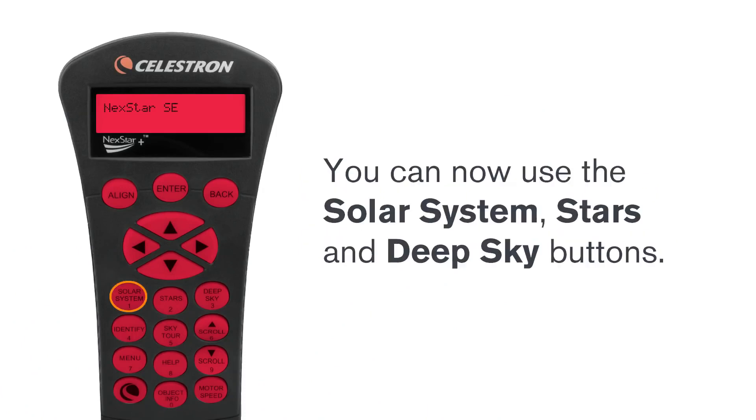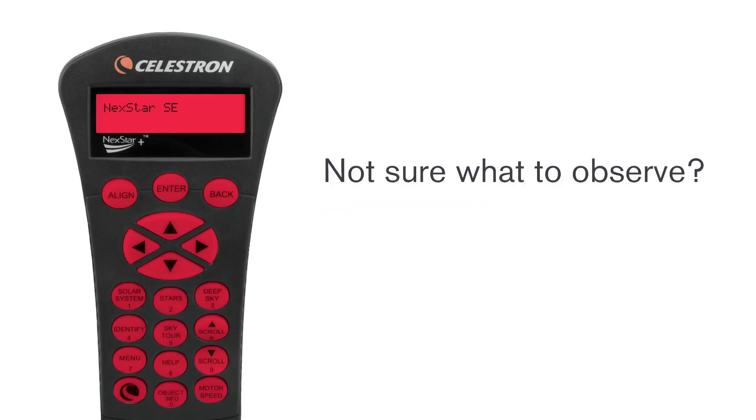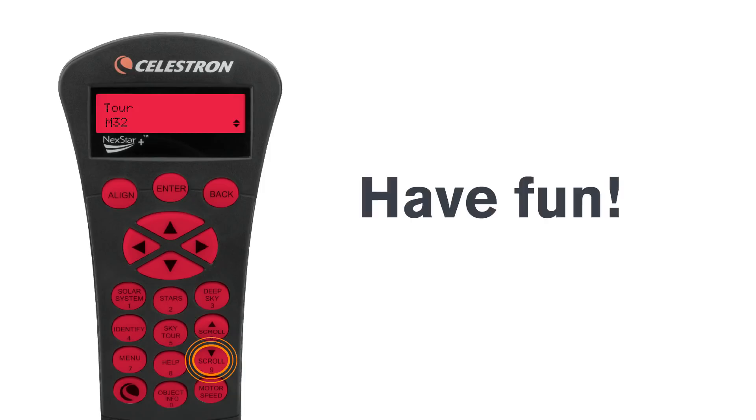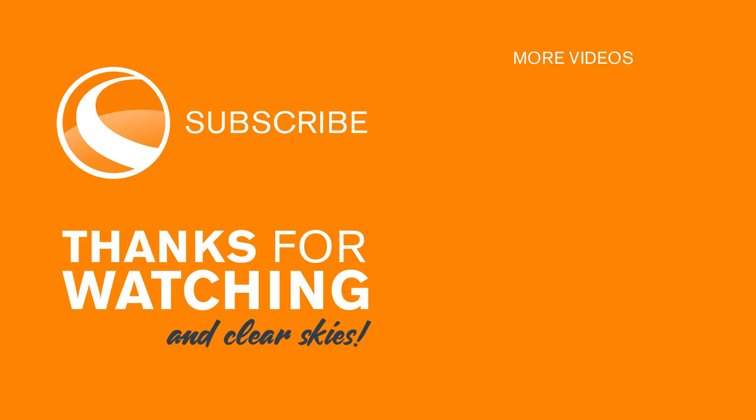You can now use the solar system, stars, and deep sky buttons to choose a celestial object to view. Not sure what to observe? Hit the sky tour button and the hand control will automatically generate a list of the best objects currently visible. Have fun! Thanks for watching and clear skies!